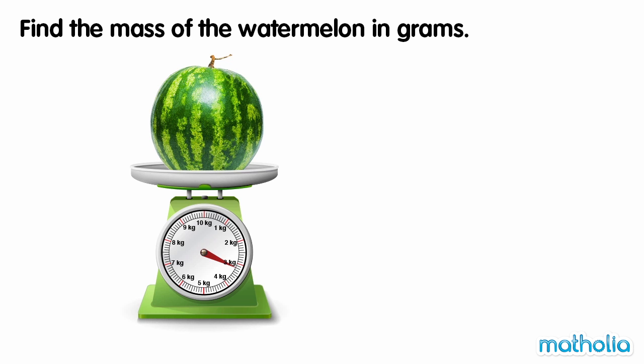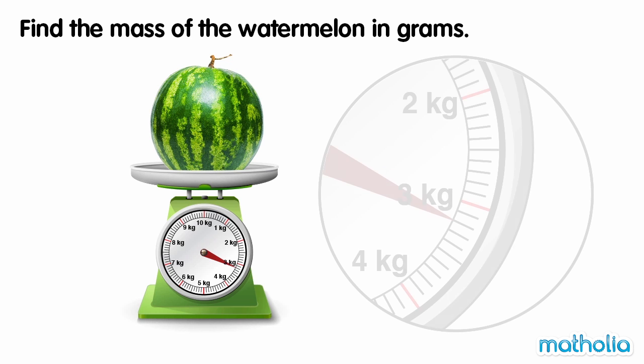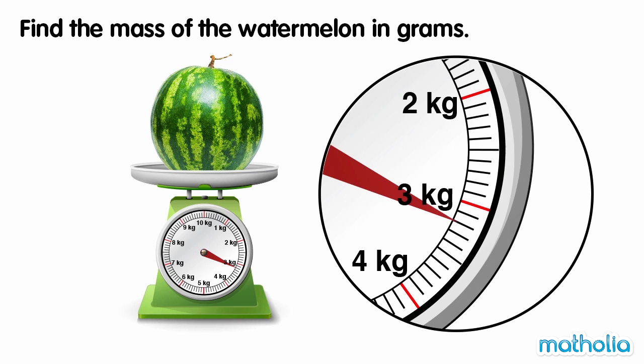Find the mass of the watermelon in grams. Each line on the scale is equal to 100 grams, so the mass of the watermelon is 3 kilograms plus 1,200 grams.